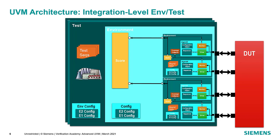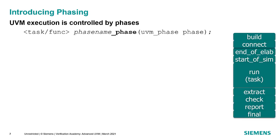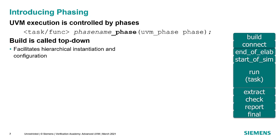In UVM, all components — including environments and tests — are controlled by a central phasing mechanism. Each component defines phase methods called in a specific order, ensuring everything completes before moving on. The first phase, build, is called top-down: starting at the top of the hierarchy, components at each lower level are built successively. In the test's build phase it creates the environment, then the environment's build phase creates the agents, and so on.